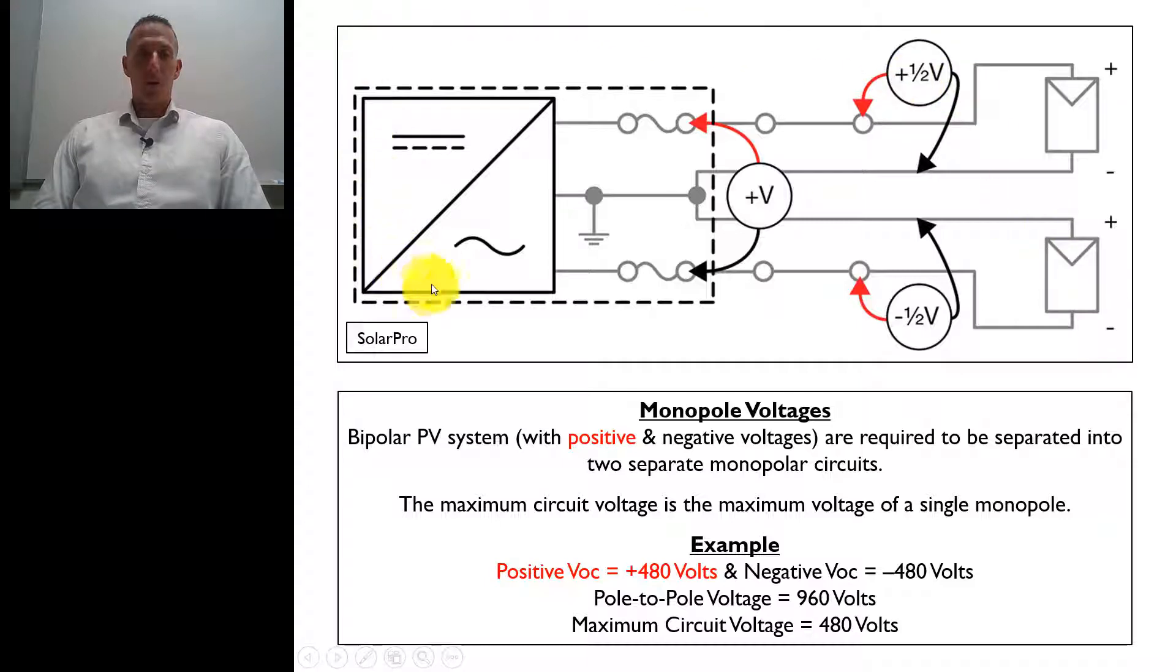This is a bipolar PV array, the entire array right here. And if we split this in half, this top part is a monopole subarray and this bottom part is a monopole subarray.